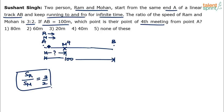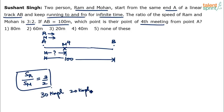Once you understand this method, answering a similar question in the exam will take no more than 10 seconds. Both started from point A running in the same direction. Since the speed ratio is 3 to 2, Ram's speed is 50% more than Mohan's — for example, 30 km/h versus 20 km/h. So Ram will always be ahead of Mohan and will reach point B first.